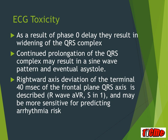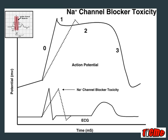You also get right axis deviation of the terminal 40 milliseconds of the frontal plane QRS, best seen by looking at the S wave in lead I or the R wave in AVR. Monitoring patients with large sodium channel blocking drug toxicity on the AVR lead — which you can switch on your monitor — lets you watch how the R-to-S wave ratio changes. We look for R-to-S ratios greater than 0.7 in AVR. Fewer available sodium channels during phase 0 slows the depolarization spike and extends the QRS complex on the ECG.